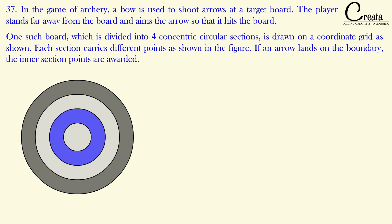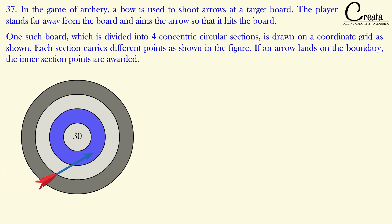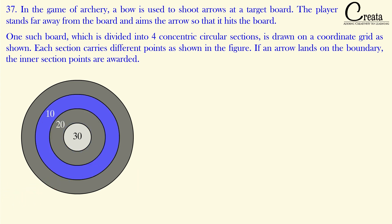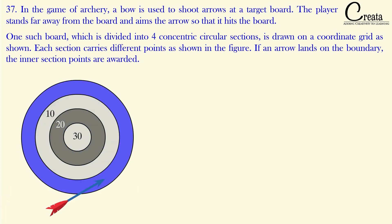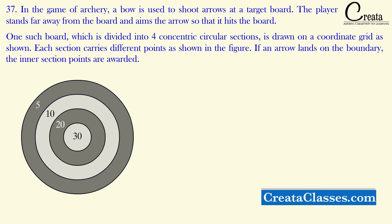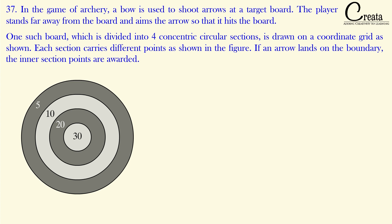The target board is divided into four different zones, each with different points. If the arrow strikes the center zone, the player gets 30 points. The next zone gives 20 points, then 10 points, and the outermost zone gives 5 points. The board and all targets are in circular form. If the arrow lands on a boundary, the inner section points are awarded.